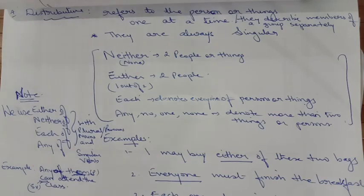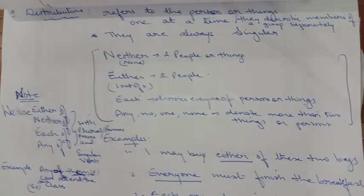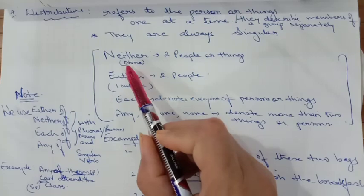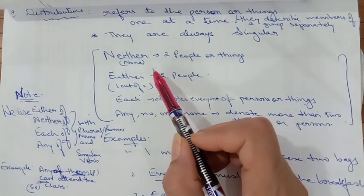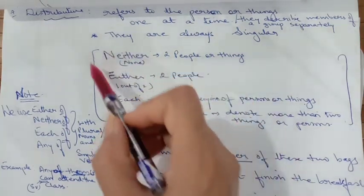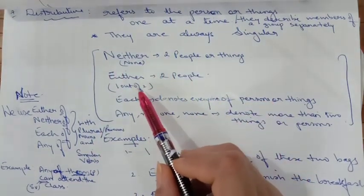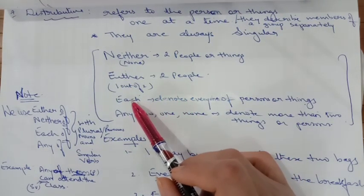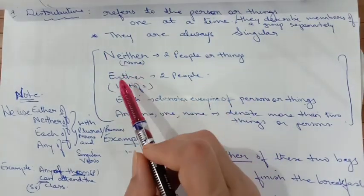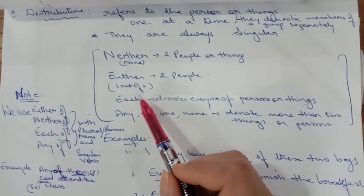Distributive pronouns refer to a person or thing one at a time. They describe members of a group separately, individually. They are always singular. 'Neither' — when two people or things are there and none of them is selected, you use 'neither.' 'Either' — when there are two people or things and one out of two is chosen, you use 'either.' Neither you will use for none; either you will use for one out of two.